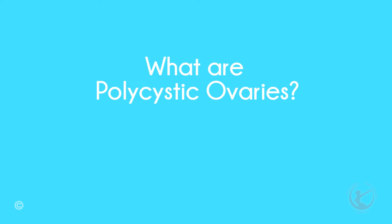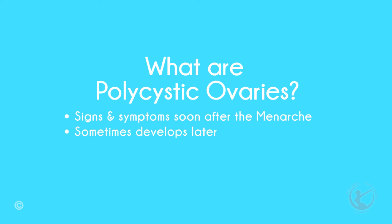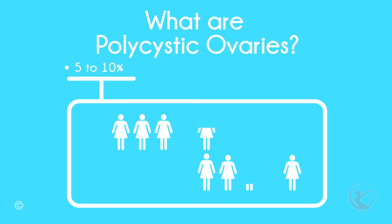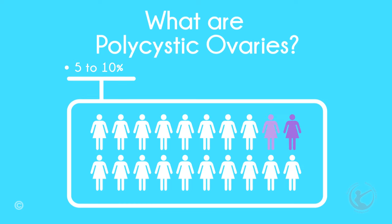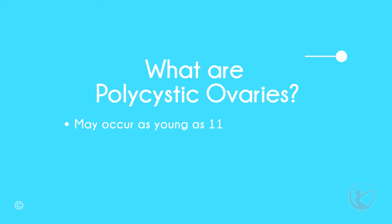The symptoms and signs of polycystic ovarian syndrome, called PCOS, often begin soon after a woman first begins having periods, called the menarche. In some cases, PCOS develops later during the reproductive years, for instance, in response to substantial weight gain. 5-10% of women may have the disease and it may occur as young as 11.